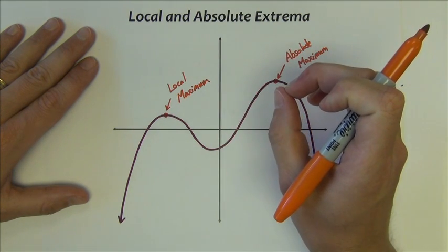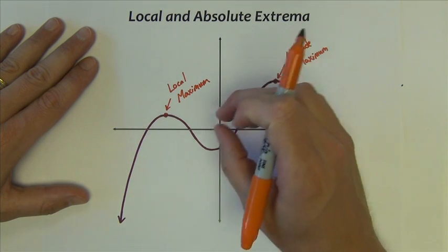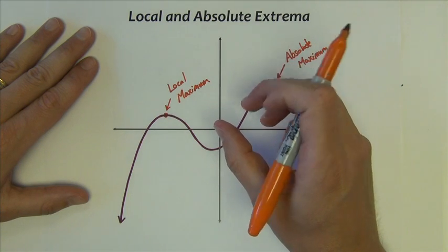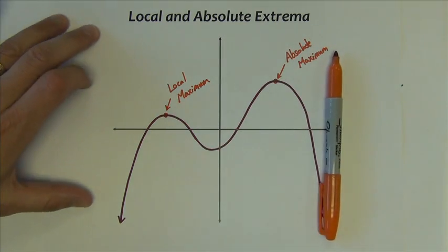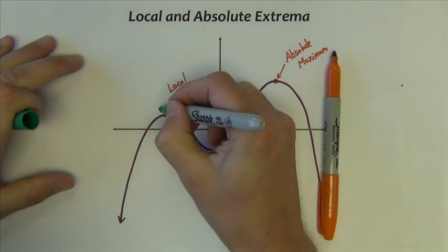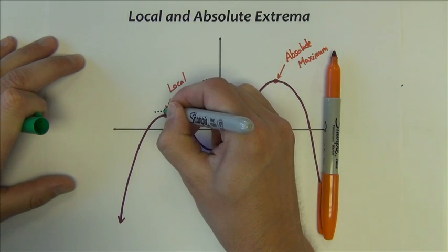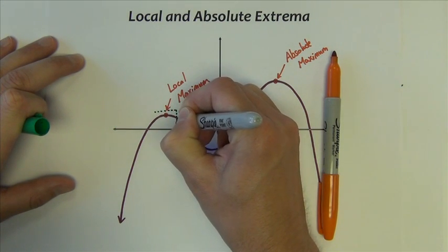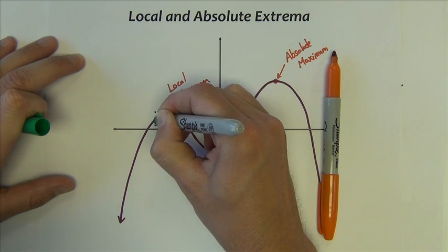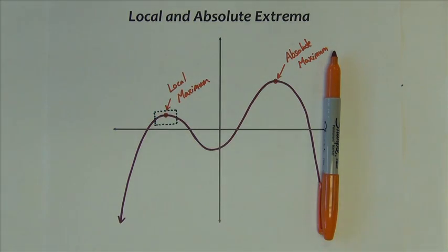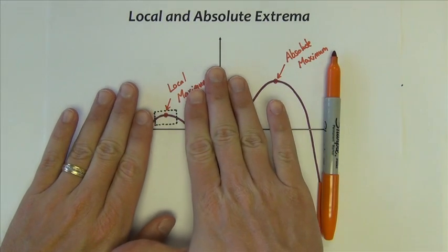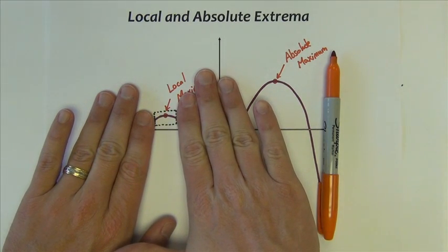We call it a local maximum because locally, meaning of all the points that are very near it. Sometimes I even do this. If I were to think about the zoom box feature on your calculator, if I were to zoom box right there and just blow that up so I erase everything else and I just look at that,